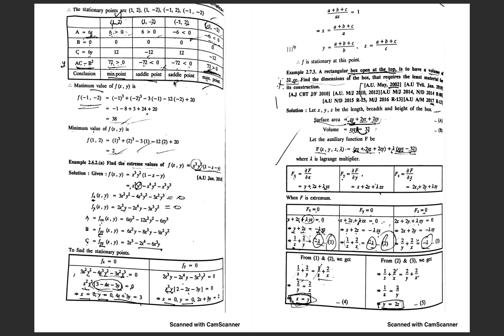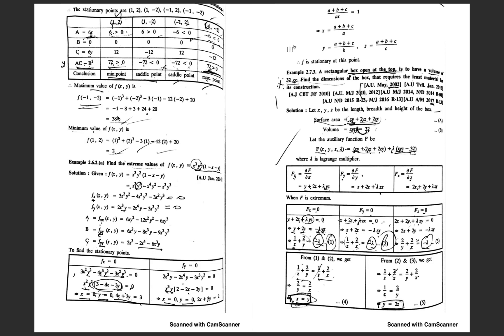If Δ > 0 and a < 0, the point is a maximum. If Δ < 0, the point is a saddle point. We substitute the critical x and y values back into the original equation to confirm the maximum and minimum values.